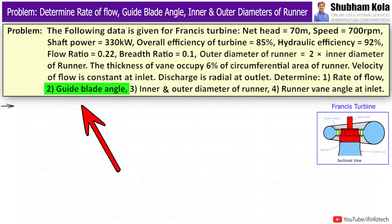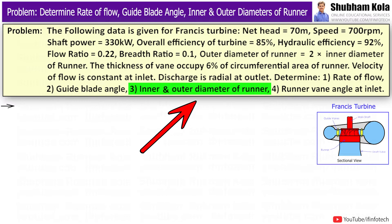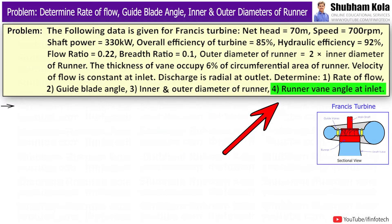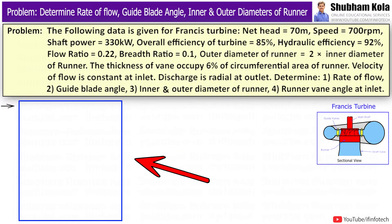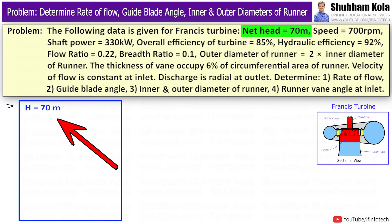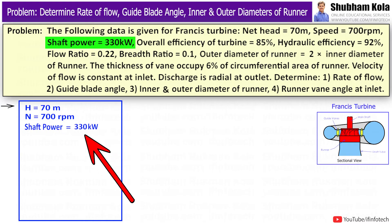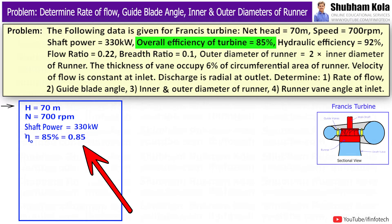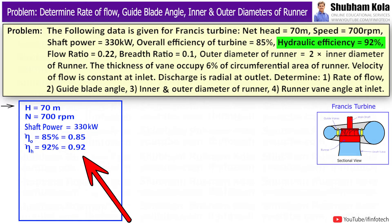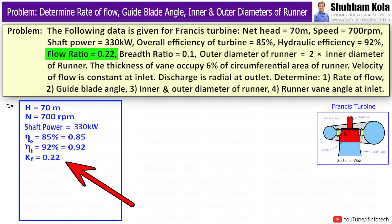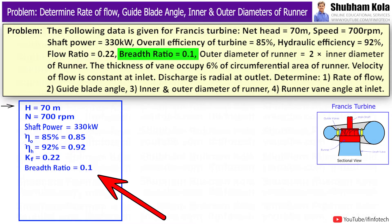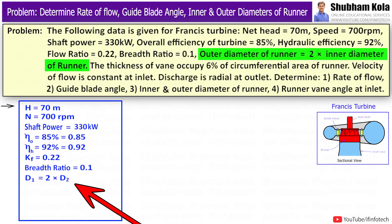Determine: rate of flow, guide blade angle, inner and outer diameters of runner, and runner-vane angle at inlet. Now let's write down what all is given: net head H = 70m, N = 700rpm, shaft power = 330kW, overall efficiency = 0.85, hydraulic efficiency = 0.92, flow ratio Kf = 0.22, breadth ratio = 0.1, and outer diameter d1 equals twice the inner diameter d2.